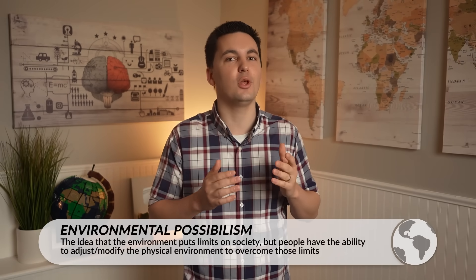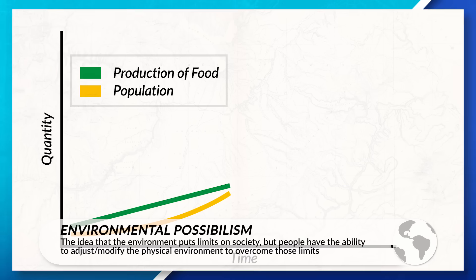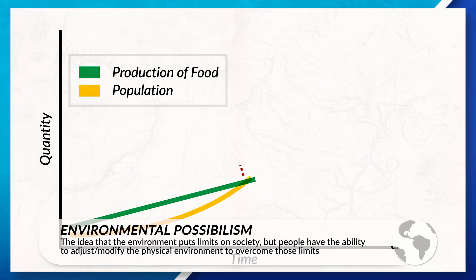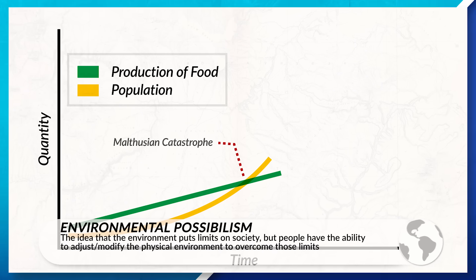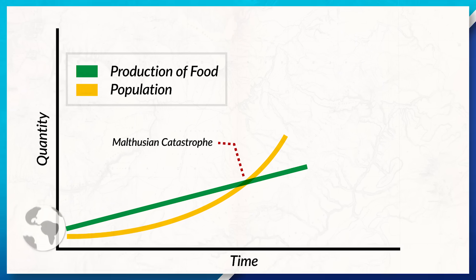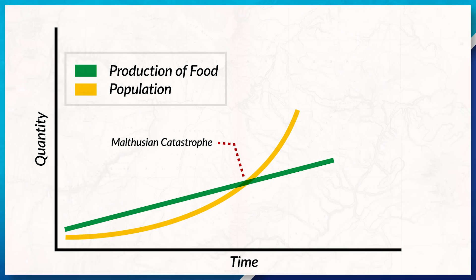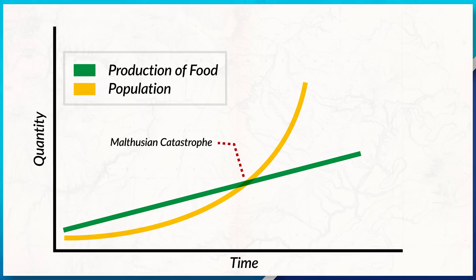All of these advancements are great examples of environmental possibilism, a concept we last talked about in Unit 1. And all of these advances counter Thomas Malthus' original idea that food production growth is arithmetic. Now, when looking at different types of agriculture around the world, we can see different types of intensive practices and extensive practices.